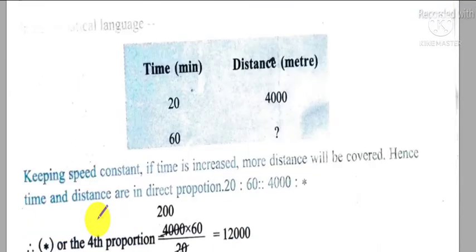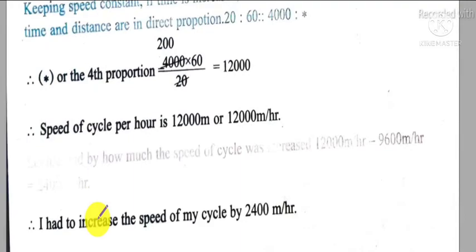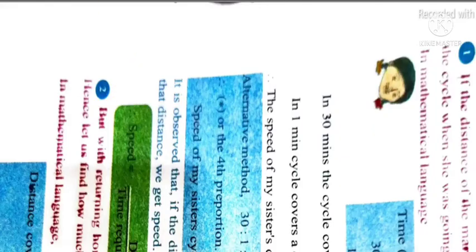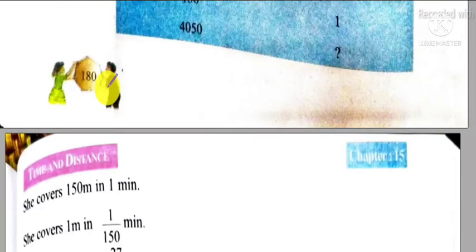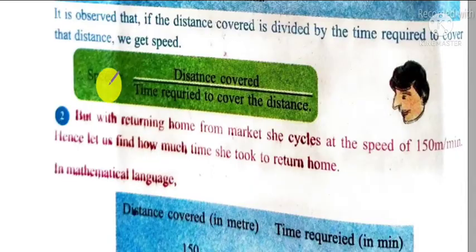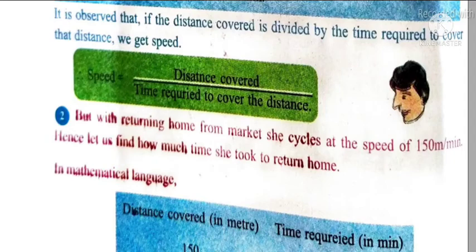Let us explain an example in your textbook. Look at the textbook page number - this is perhaps page number 180. Here a distance of 150 meters is covered in 1 minute. So for covering 4050 meters, required time will be - let the time be x.